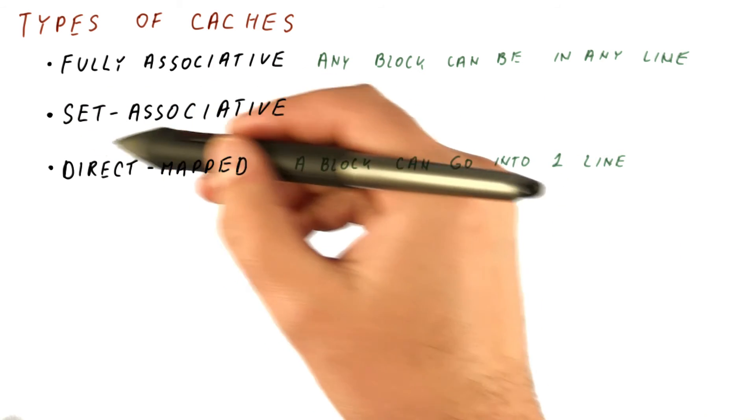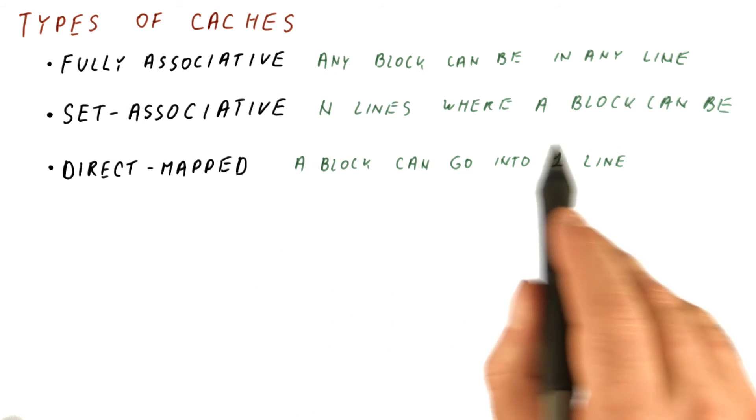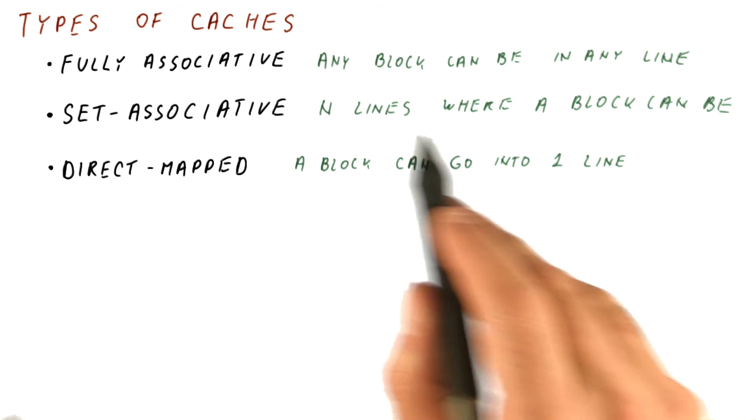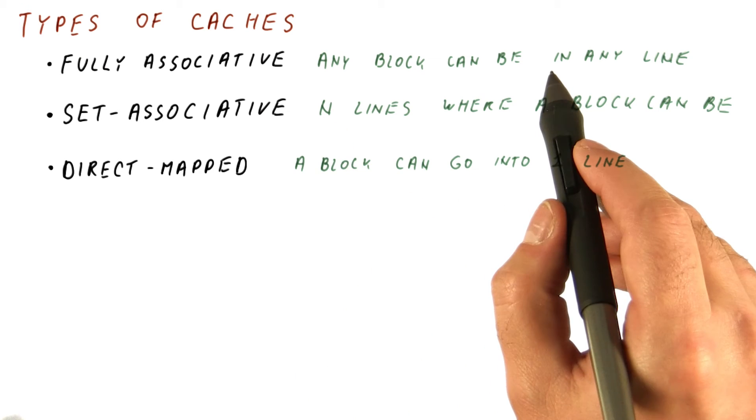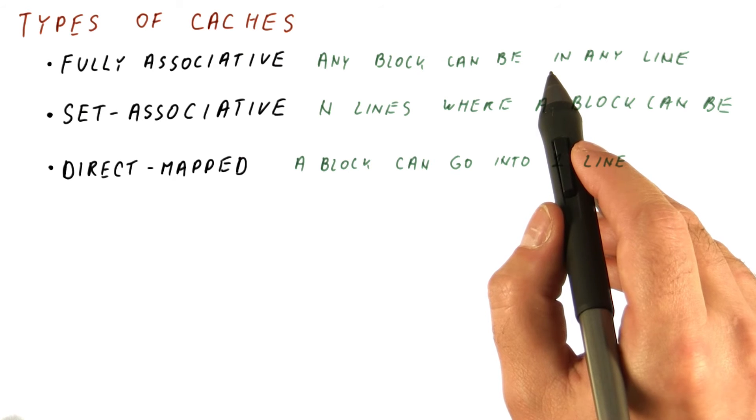which is called a set-associative cache where there are n lines where a block can be. Now, n typically will be larger than one and smaller than the total number of lines in the cache.